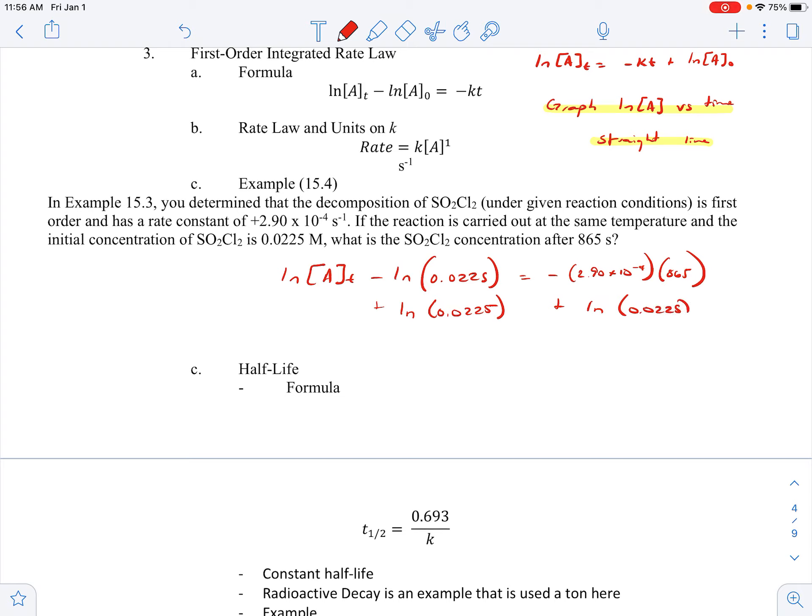So we do our calculator and we get negative 4.04. But we have that natural log there. How do we get the natural log out? We use our E button, or inverse natural log. And so e^-4.04 would be our [A]_t, which is going to equal 0.0176. Now real quick check, does that make sense to us? Did the concentration go down? Yes, it did. Awesome.